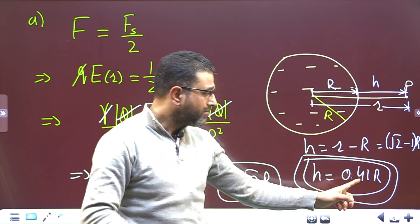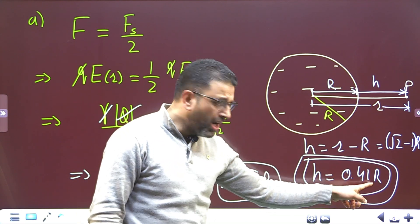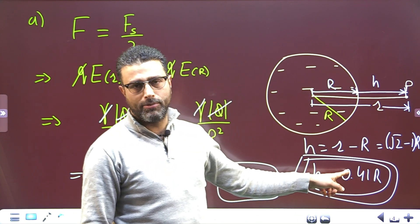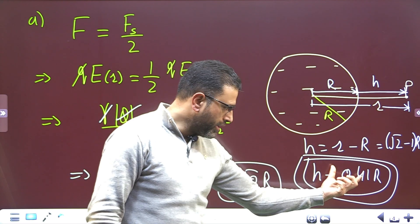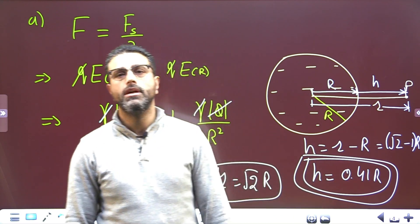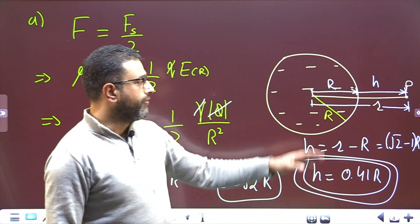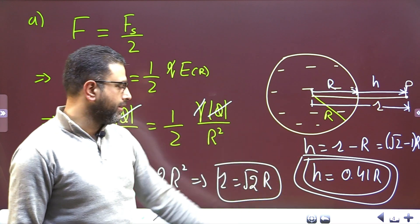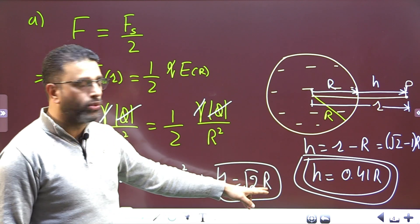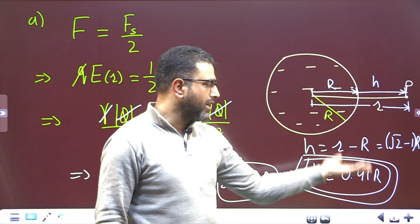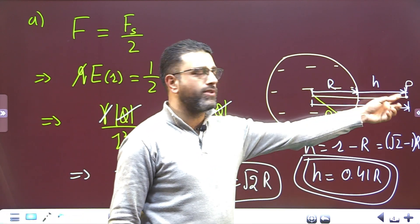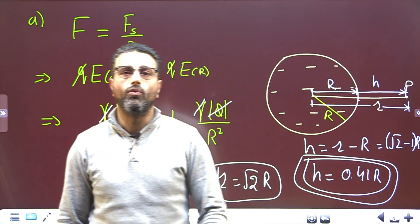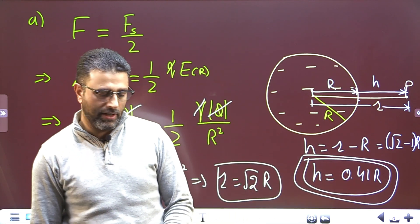Since √2 ≈ 1.41, we get h = (1.41 − 1) × R = 0.41R. So as a multiple of capital R, the proton is 0.41R from the surface of the sphere. If asked for distance from the center it would be √2 × R, but the answer from the surface is 0.41R.